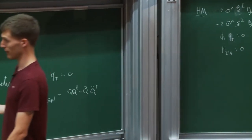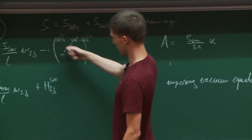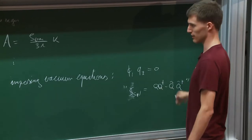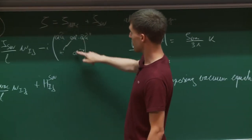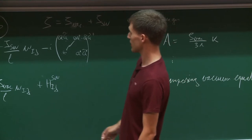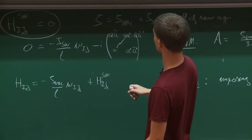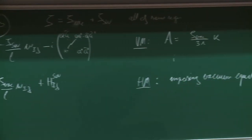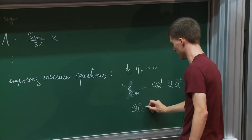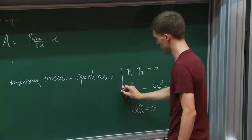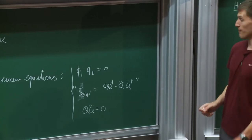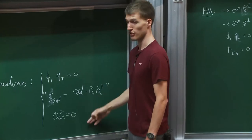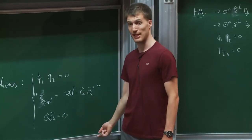Since this is an N=2 theory I have two additional equations from the off-diagonal components. Since W was off-diagonal, I additionally have equations like q times q-tilde equals zero. At the end of the day these are just vacuum equations for the 4d N=2 theory where I have turned on an FI parameter.